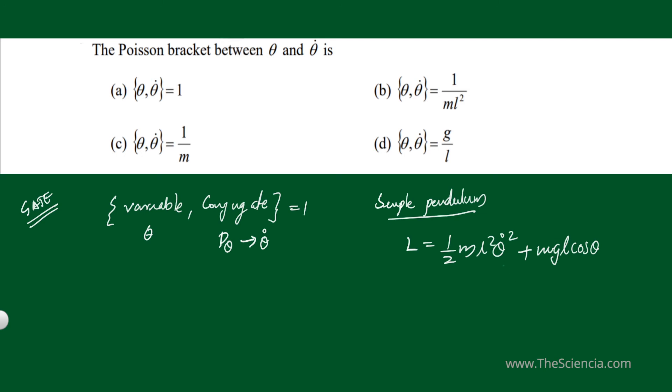Here the generalized coordinate is theta. The corresponding momentum P theta equals ∂L/∂theta dot, which equals M L squared theta dot. So we can relate theta dot as P theta divided by M L squared.